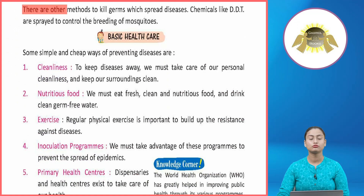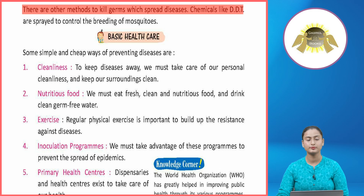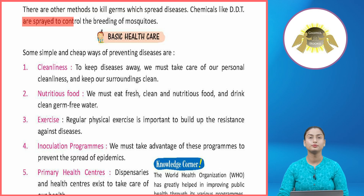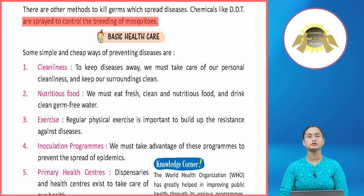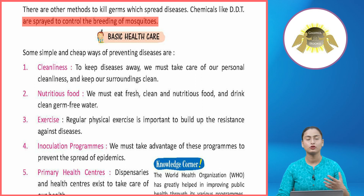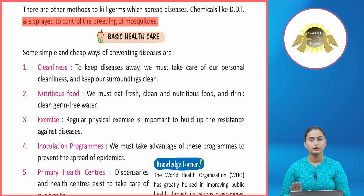There are other methods to kill germs that spread diseases. Chemicals like DDT are sprayed to control the breeding of mosquitoes. DDT is a chemical that inhibits the breeding of mosquitoes.